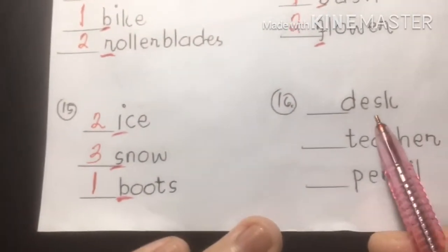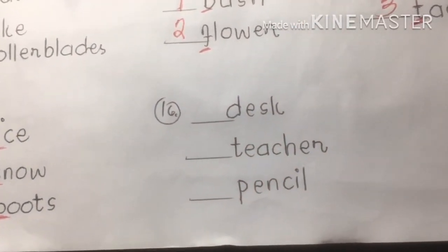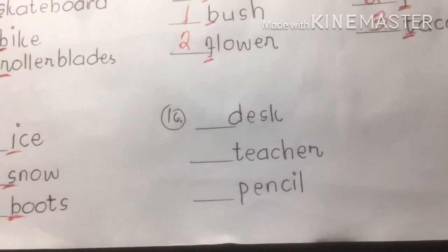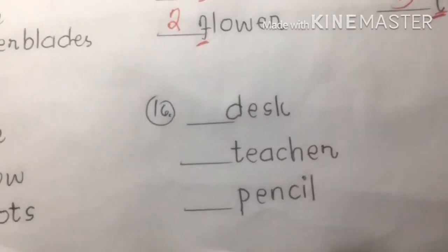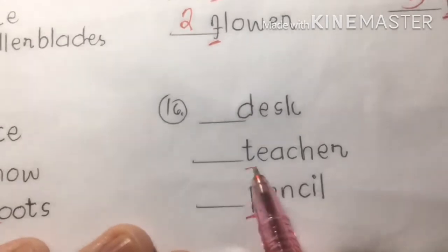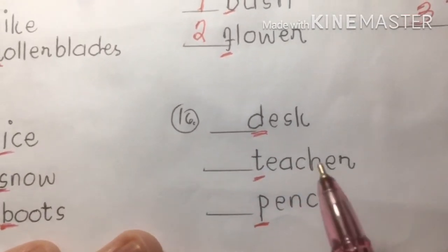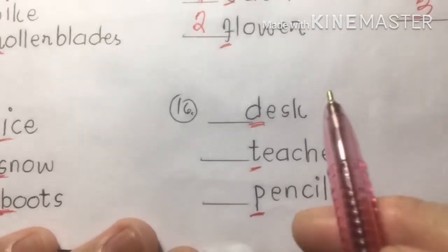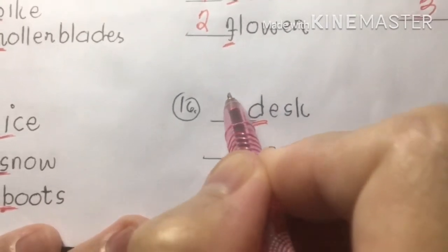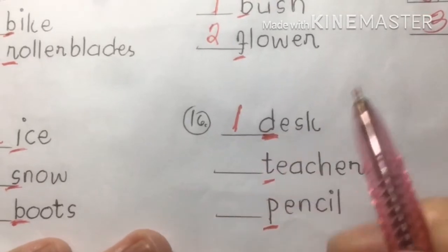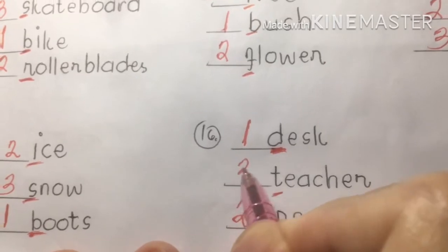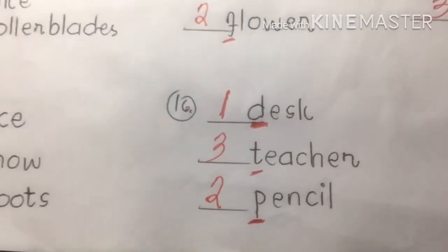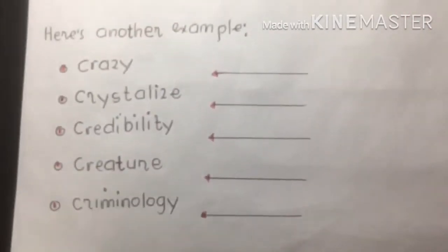Number sixteen: dust, teacher, pencil. A teacher needs dust — D is first. She needs pencil — P is second. And teacher — T is last. So the order is: dust, pencil, teacher.